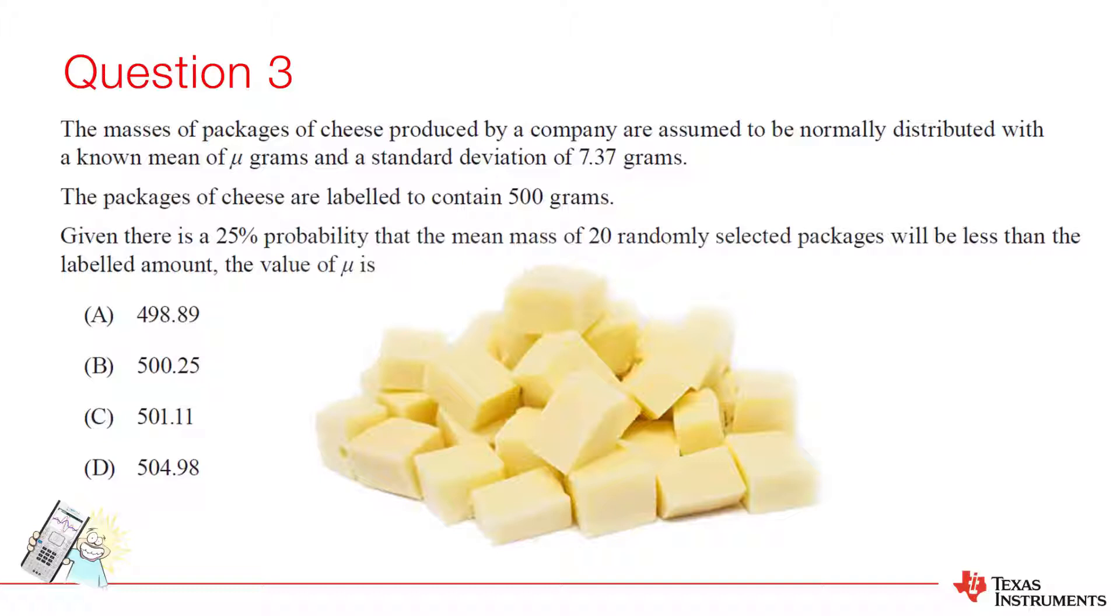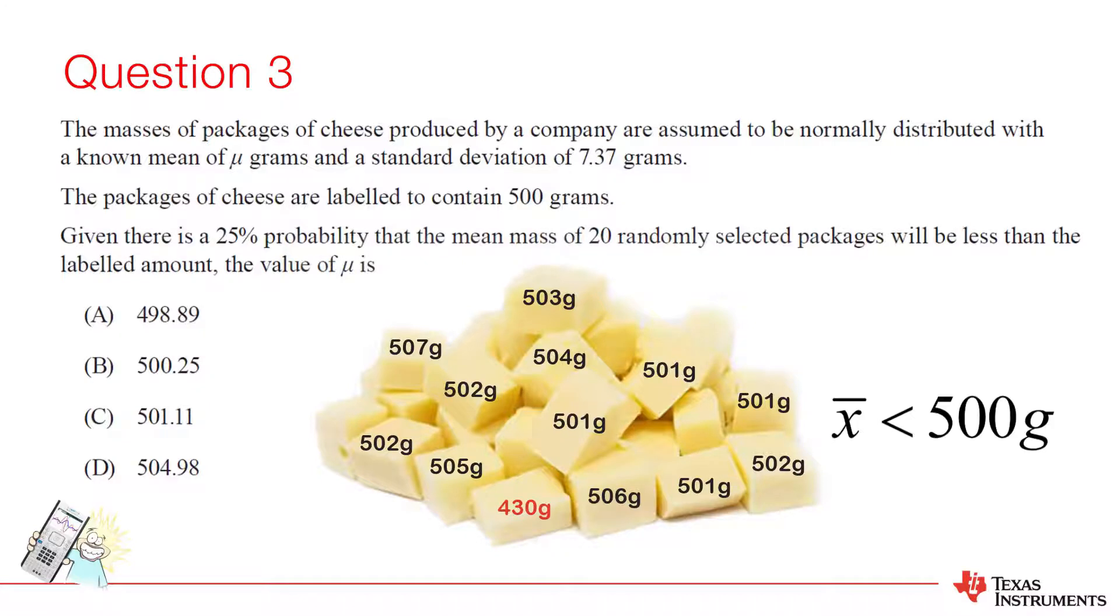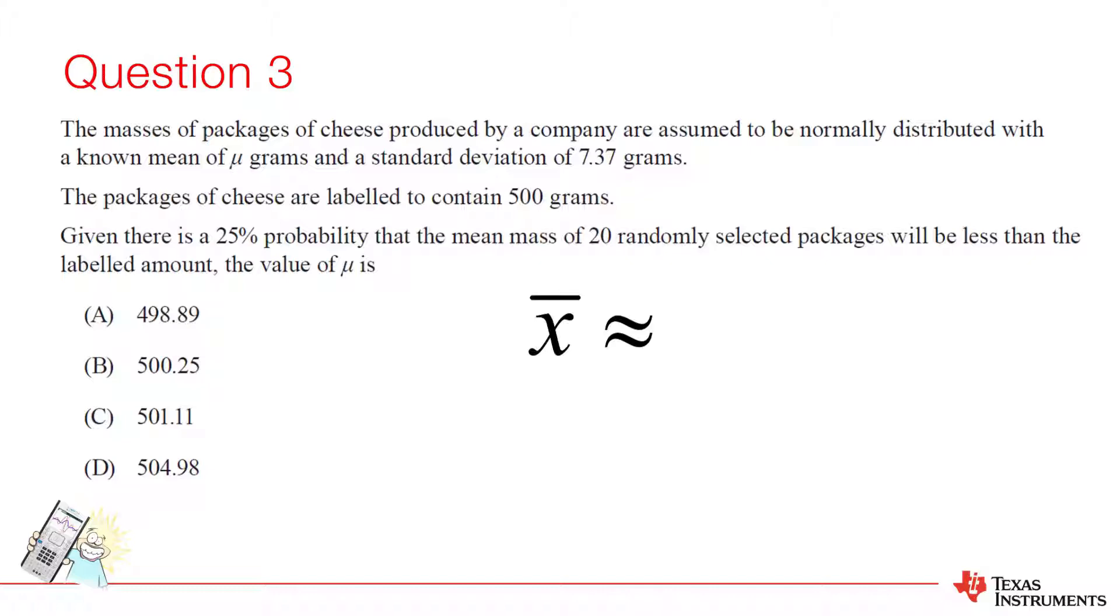For example, you might purchase 20 packets of cheese, 19 of them may be just over 500 grams and one might be significantly under, meaning that the sample mean is less than 500 grams. The mean of a sampling distribution is assumed to be the same as the population, but the standard deviation of the sampling distribution, referred to as standard error, is equal to the standard deviation over the square root of n.